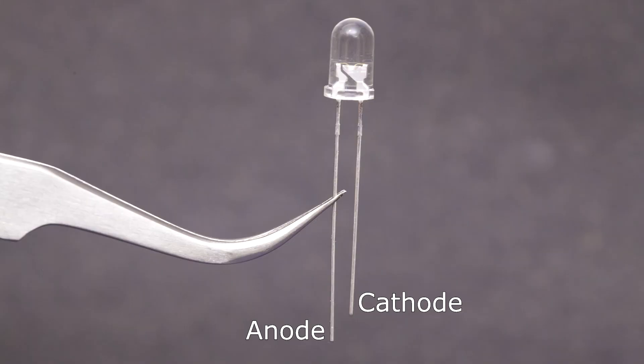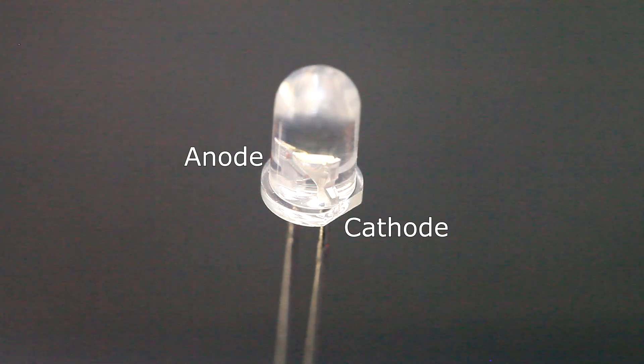For standard 5mm LEDs like this, there are two easy ways to figure out the polarity. The anode will have a longer lead, and the cathode will have a shorter lead. Also, if you look carefully, you'll see that one side of the case has been filed down flat. The flat side is the cathode, and the round side is the anode.